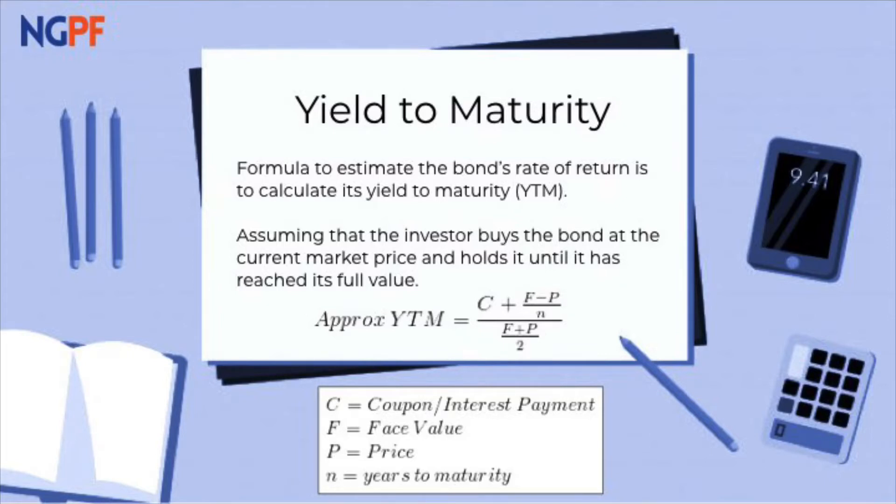We can calculate for this if we assume that the investor buys the bond at the current market price and holds it until it has reached its full value at maturity. The formula for yield to maturity is provided here, as well as our variables of the coupon payment, face value, price, and years until maturity.